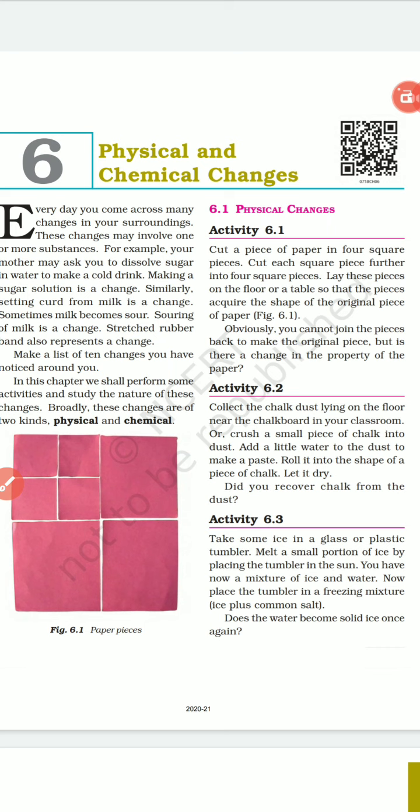The properties like shape, size, color, state are called physical properties, and a change in which a substance undergoes change in physical properties are called physical change. For example, cutting paper into pieces, or preparing ice from water.